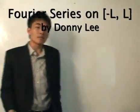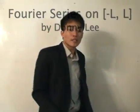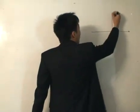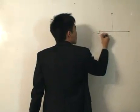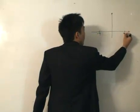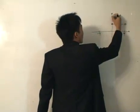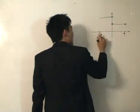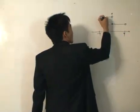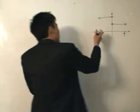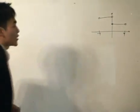Hi. In our previous examples of the Fourier series, we have been dealing from the limits of minus pi to pi. We define a certain function — if you can recall, it went from minus pi to pi, where from 0 to pi it equals 1, and from minus pi to 0 it's equal to 2. We apply the Fourier coefficients, integrating from minus pi to pi, and we get the Fourier series.